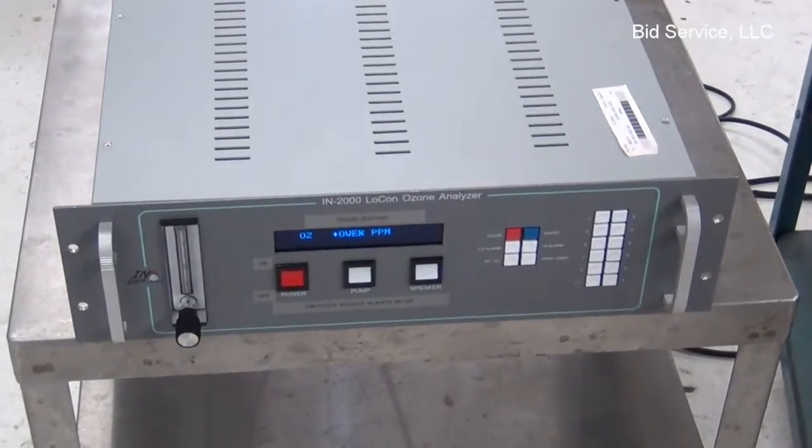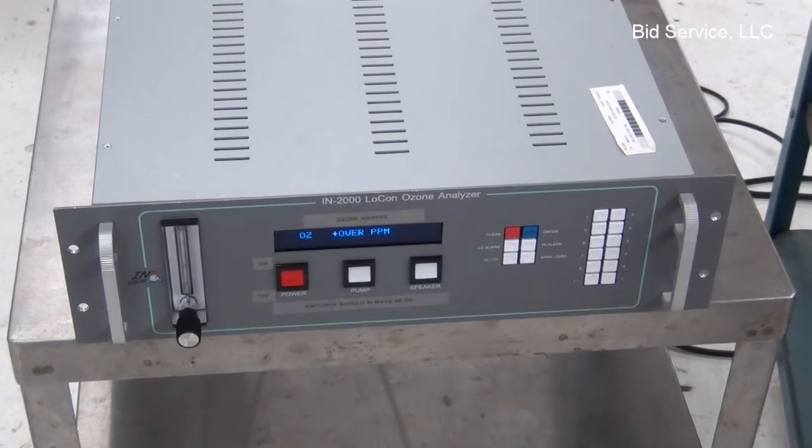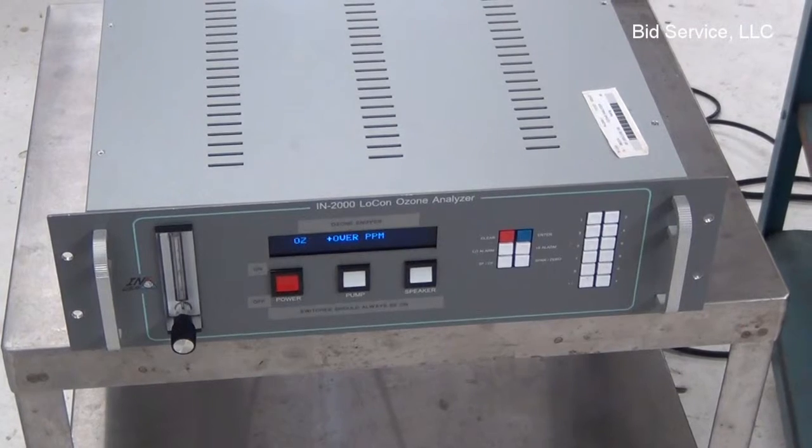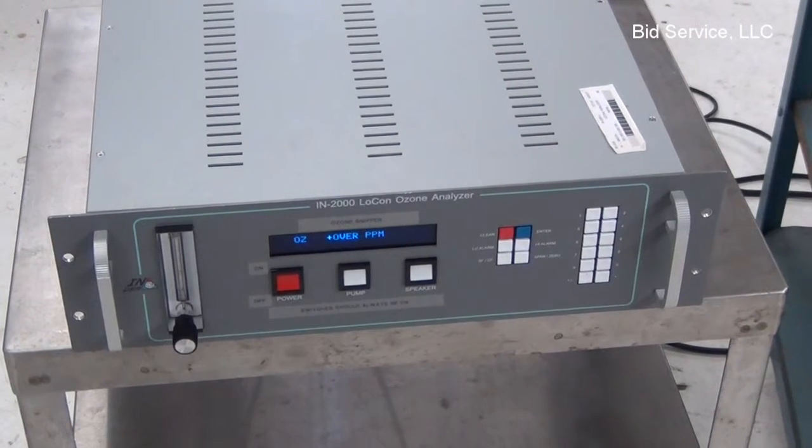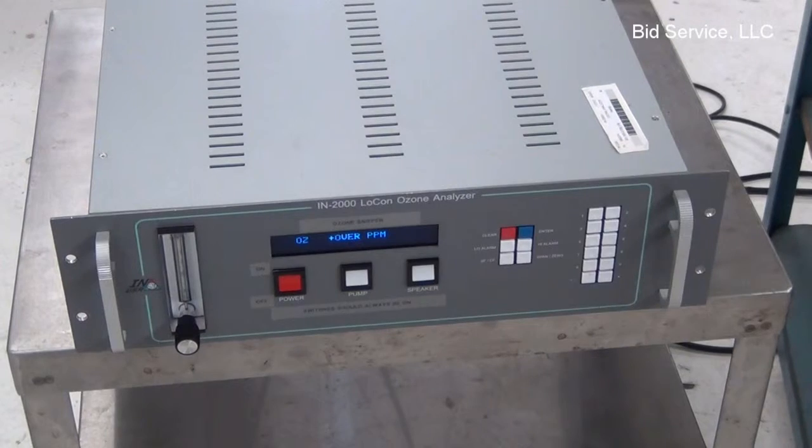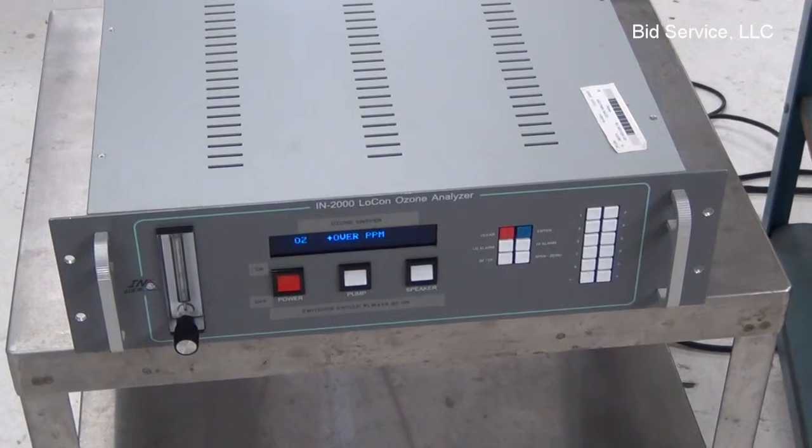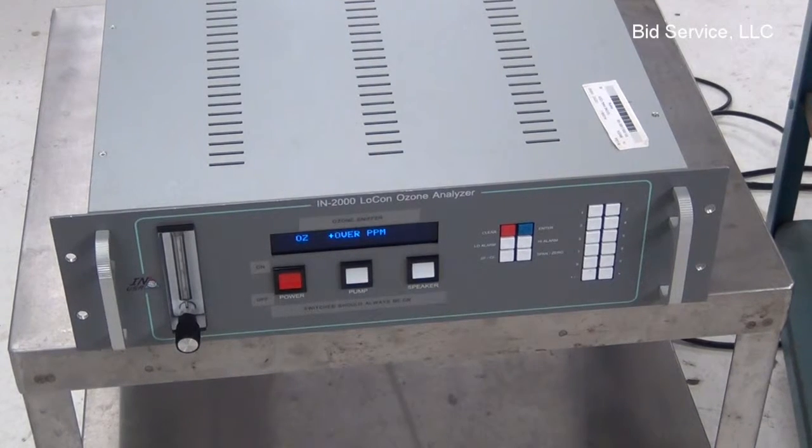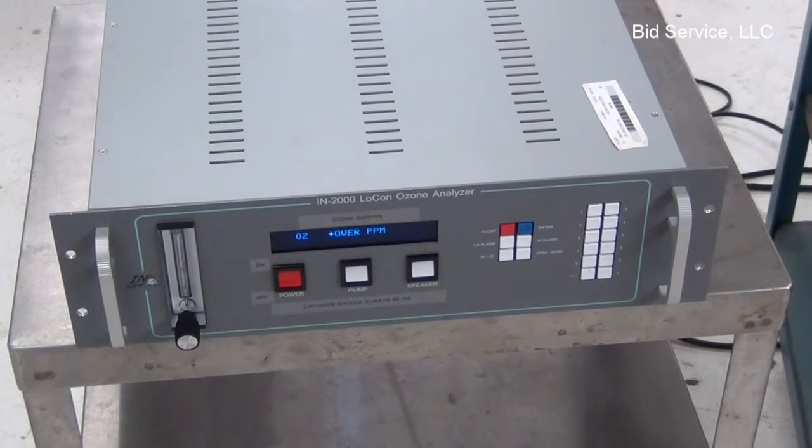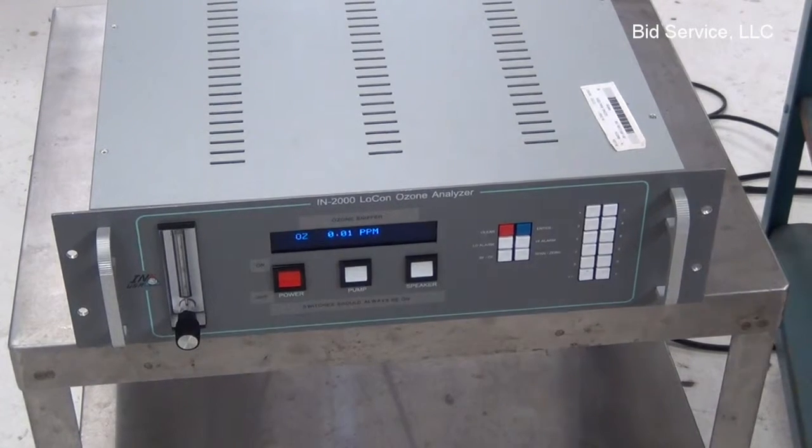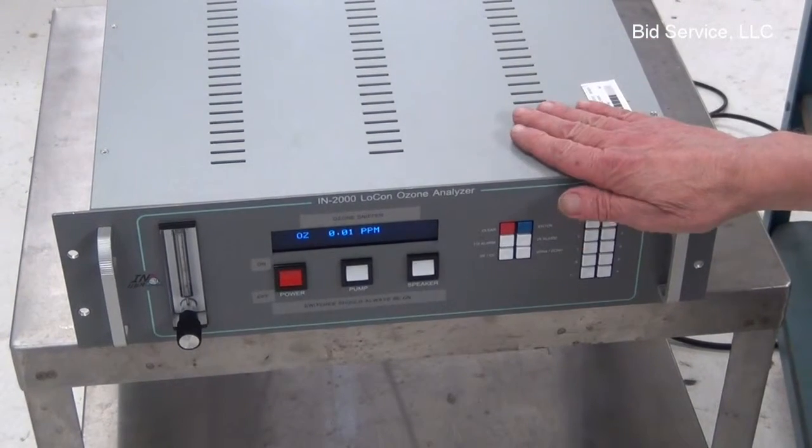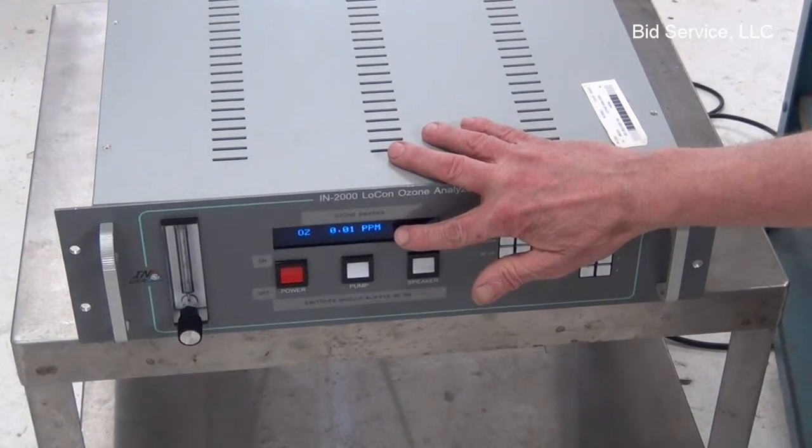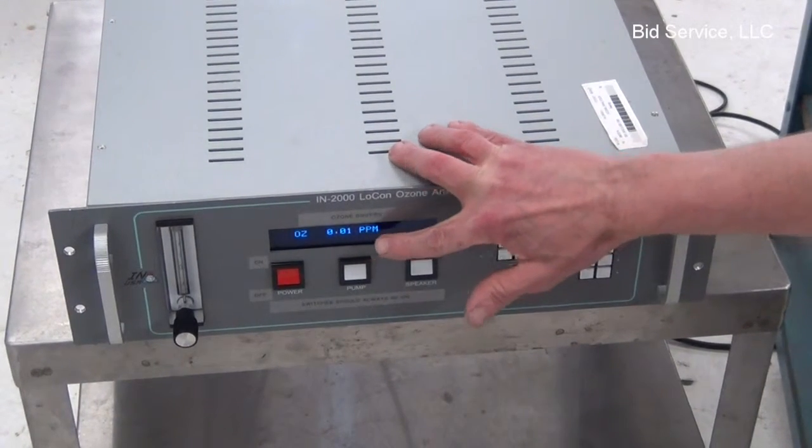Once we remove the ozone source, the ozone level will then decrease, and we can get back down to our ambient measurements of 0.01 parts per million.